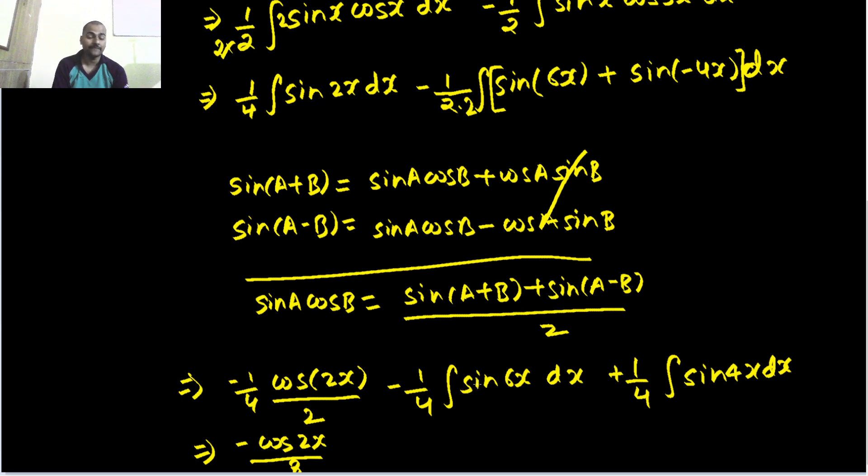Here, integration of sin will be minus of cos, minus minus plus cos 6x. One by 4 already there, one by 6 will come, that will make it 24. And here, sin 4x again, negative cos 4x. One by 4 was already there, one more 4 will come, and that will make it 16, plus a constant. So your final answer becomes minus cos 2x divided by 8 plus cos 6x divided by 24 minus cos 4x divided by 16.